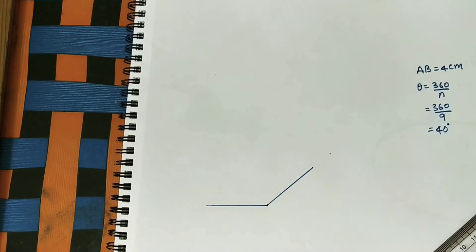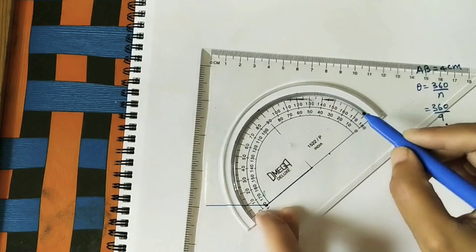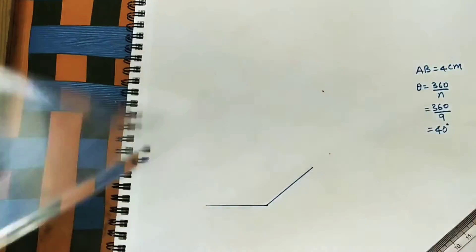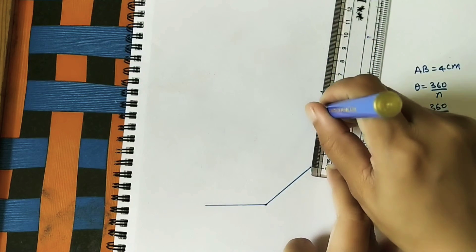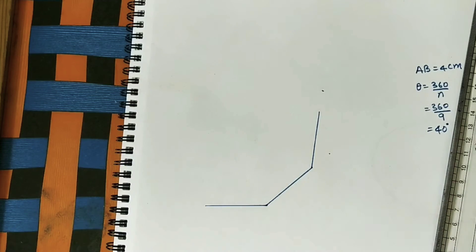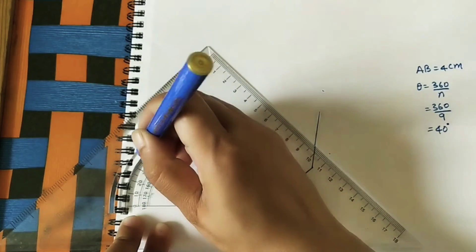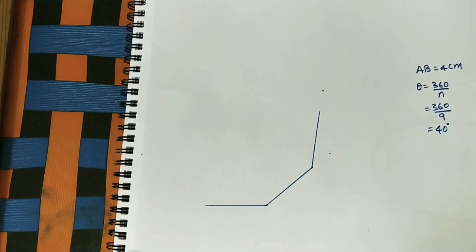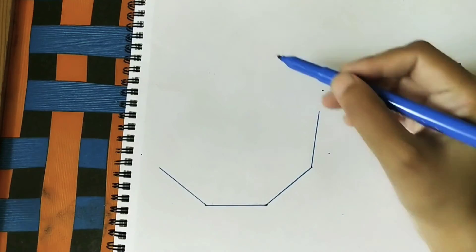And again 40 degrees outer angle, so it is 40 here. Just do one point here and in that direction take 4 centimeter line. Again I will do this side 40 degrees outer angle, so from this here mark 40, so take 4 centimeter in this direction.